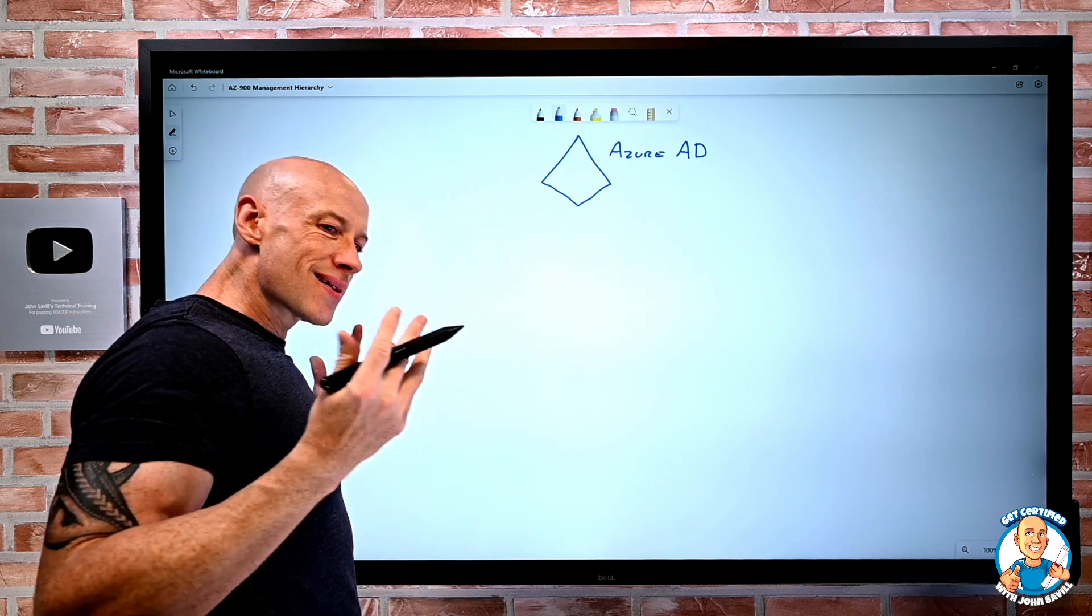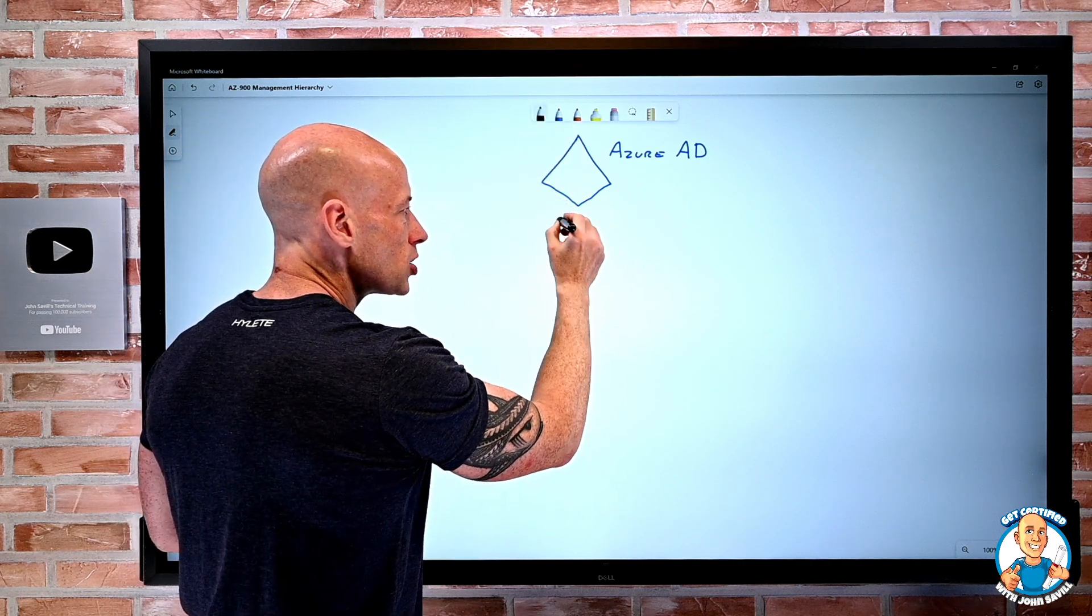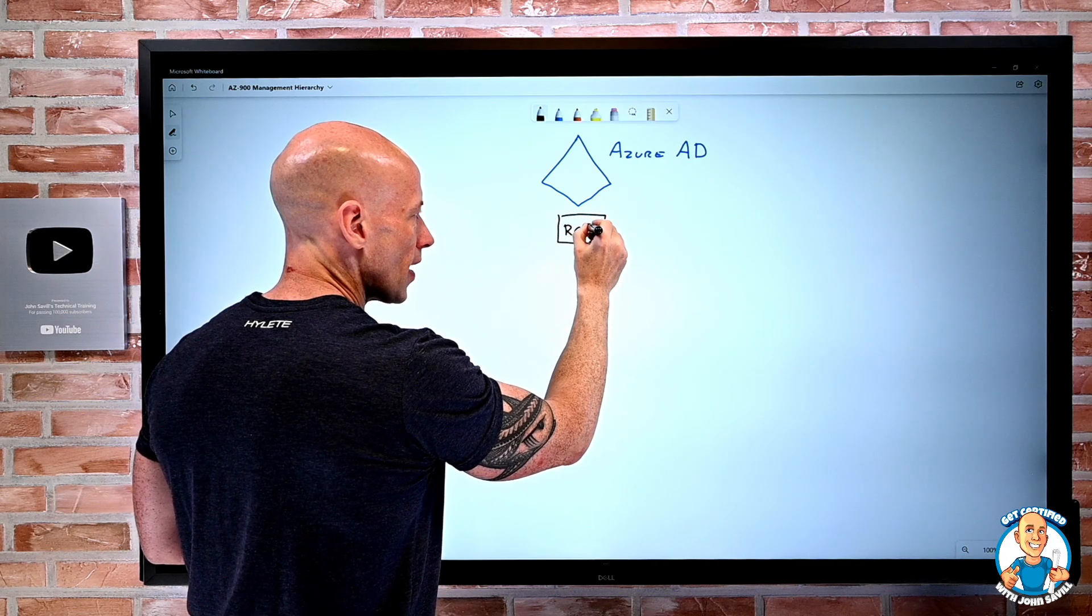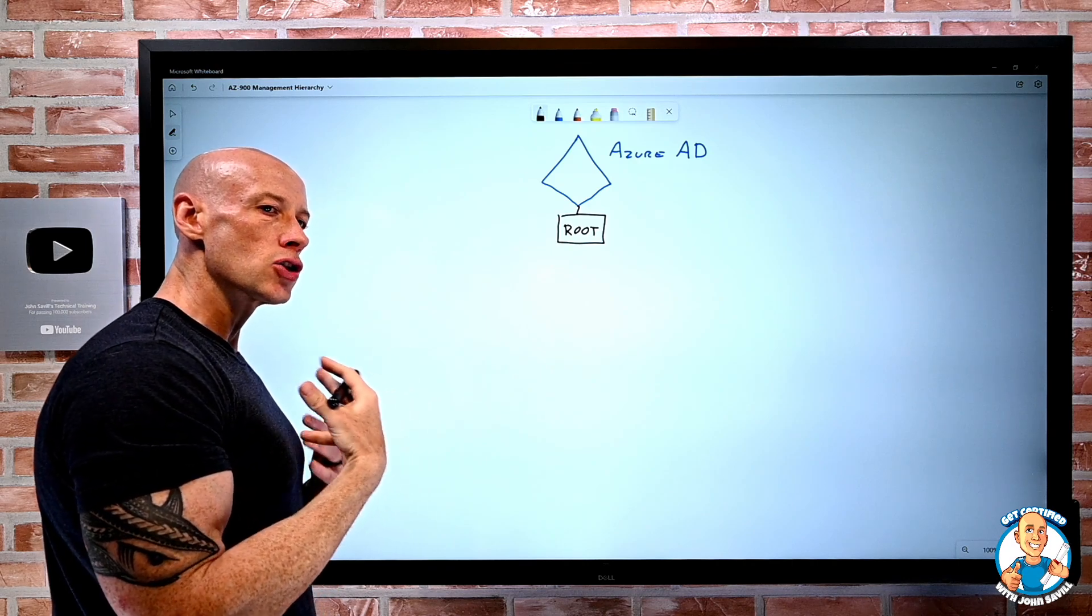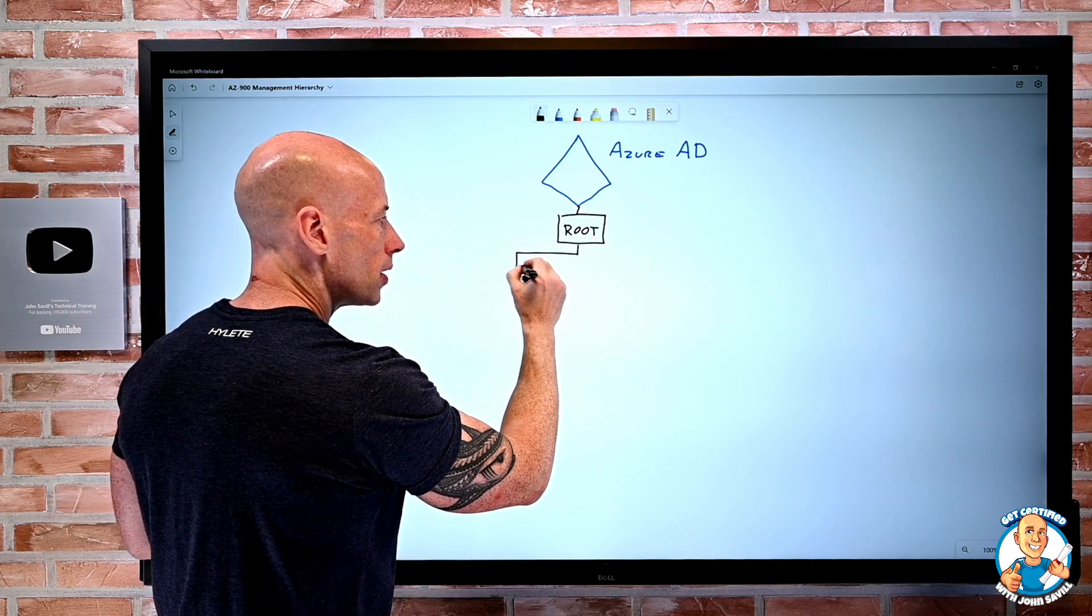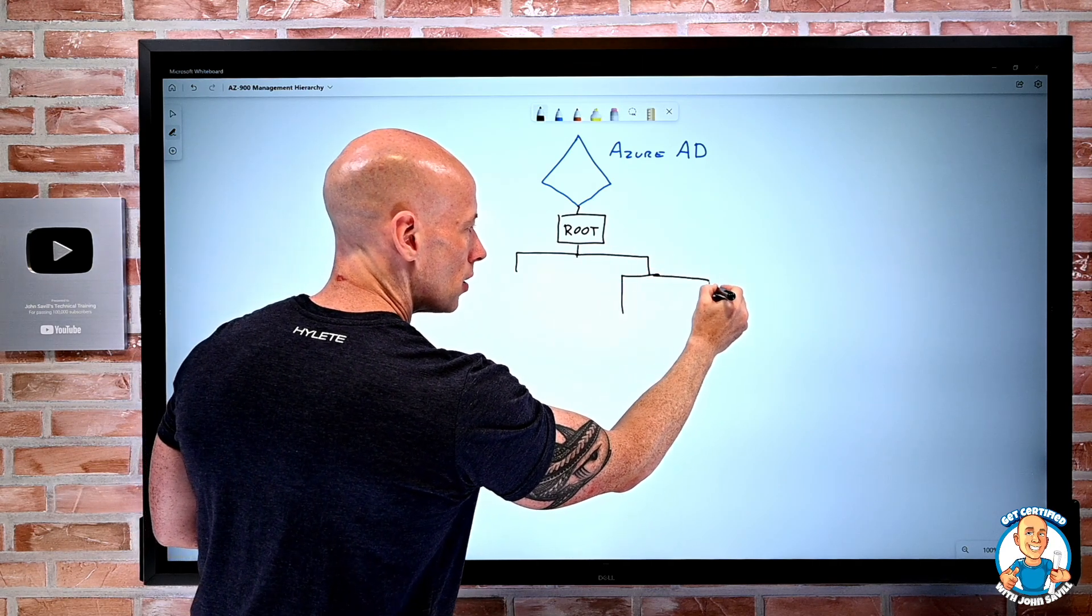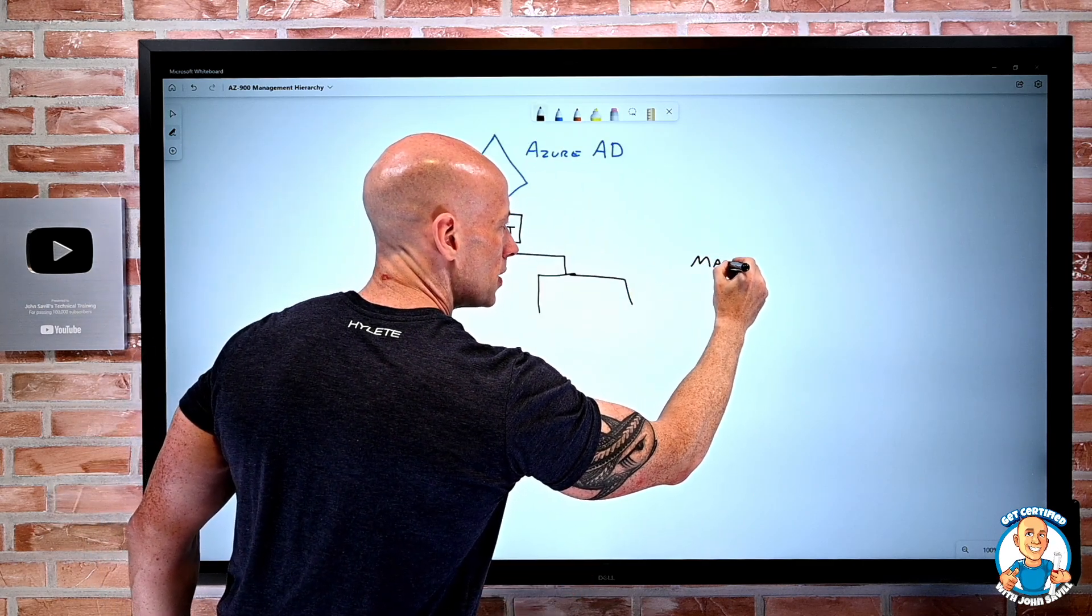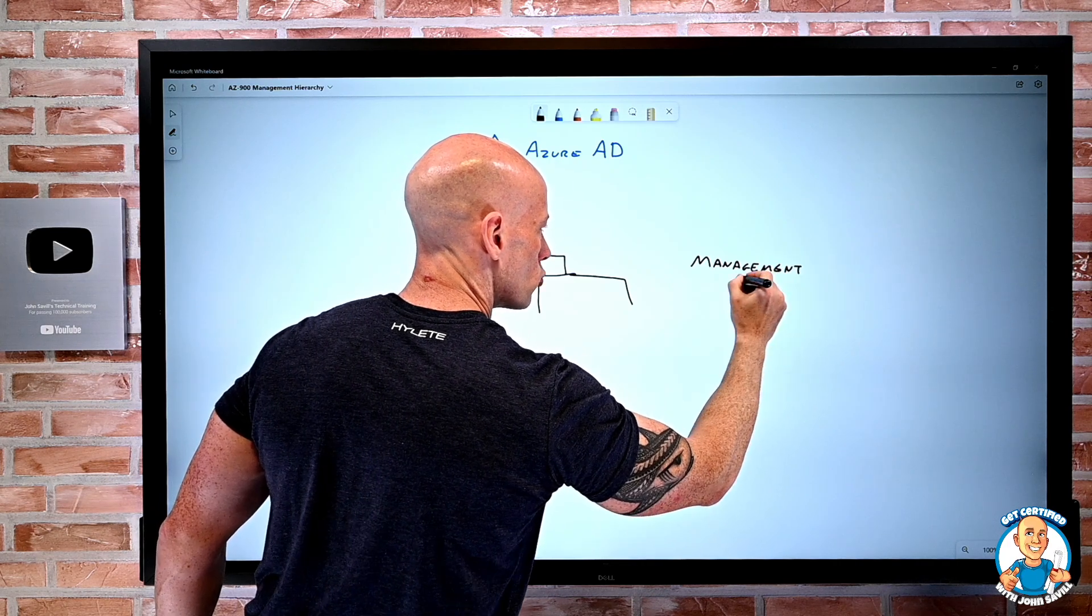Then from a governance and management perspective, under the Azure AD, we have the idea of a root management group that's tied directly to our Azure AD instance. Now, under that root management group, I can then create my own hierarchy of management groups.